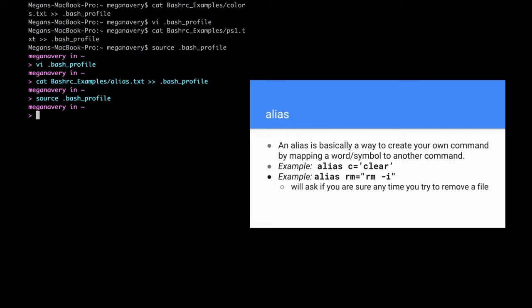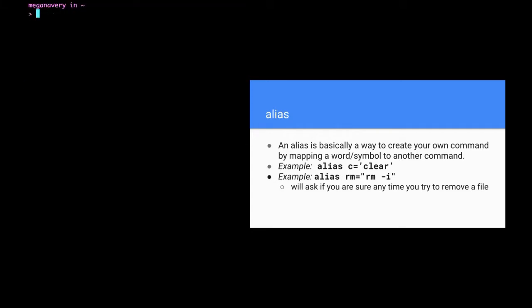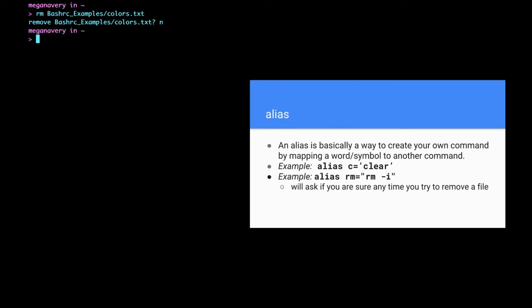After running 'source .bash_profile' to apply it, now if I do 'c' that'll clear my command. And if I try to remove something like my colors.txt file, it'll ask me if I'm sure. If I say yes with 'y' the file will be deleted, and if I say no with 'n' it won't delete it. I'm going to do 'n' because I want to keep that file.